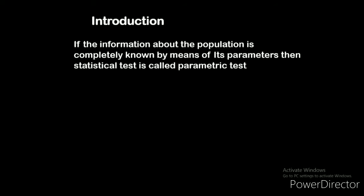The introduction to parametric tests. First, we know about the parameter. What is the parameter? A parameter is nothing but the limits and the scope. If the information about the population is completely known by means of its parameters, then the statistical test is called the parametric test. The parametric test is a hypothesis test which provides the generalization for making statements about the mean of the parent population.